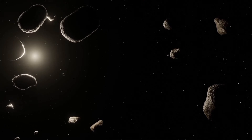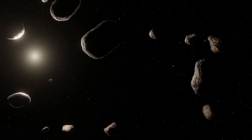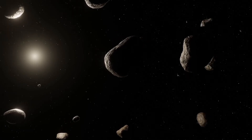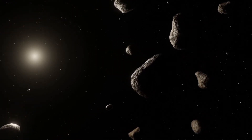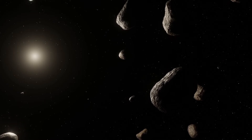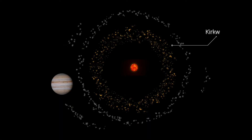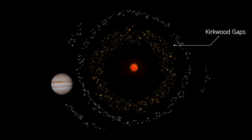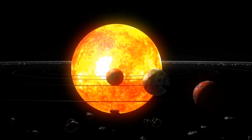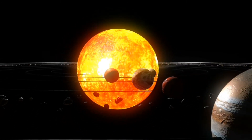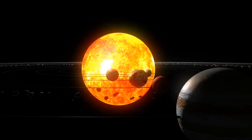There are millions of asteroids in the main asteroid belt between Mars and Jupiter, but in other parts of the belt, asteroids are almost absent. This region is known as Kirkwood gaps. Kirkwood gaps are gaps in the distribution of asteroid orbital periods. These gaps occur at simple fractions — for example, one-half, one-third — of Jupiter's orbital period. Kirkwood gaps are caused by the gravitational interaction between Jupiter and asteroids with these periods.